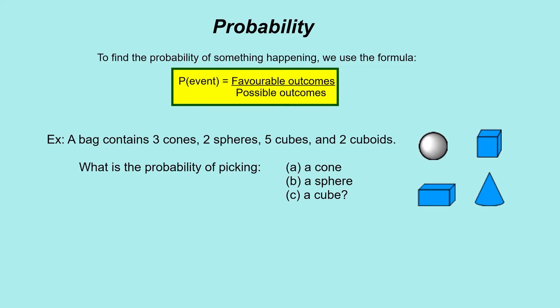We've got an example down here. Favorable outcomes basically just means the outcomes you're wanting to happen. Possible outcomes is all the possible outcomes that could happen. If we look at this example, we've got a bag containing 3 cones, 2 spheres, 5 cubes, and 2 cuboids. We want to figure out the probability of picking a cone first of all.